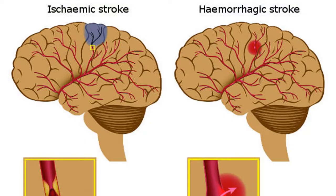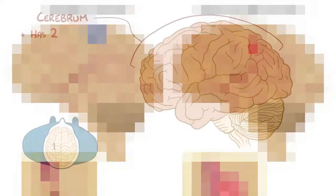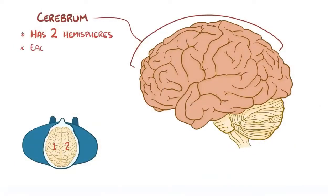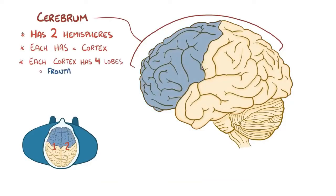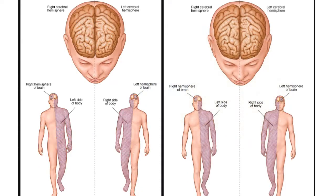Let's start with some basic brain anatomy. The brain has a few regions. The most obvious is the cerebrum, which is divided into two cerebral hemispheres, each of which has a cortex — an outer region — divided into four lobes: including the frontal lobe, parietal lobe, temporal lobe, and the occipital lobe.